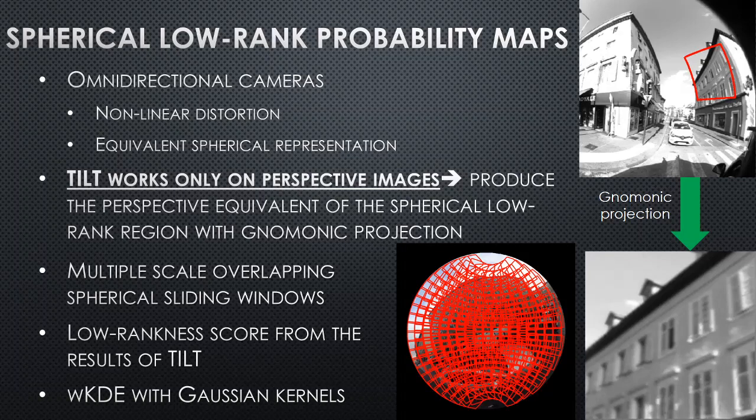The main problem is that TILT works only on perspective images, so first we need to produce the perspective equivalent of a local spherical region. To do this, we use the gnomonic projection and the fact that an omnidirectional image always has an equivalent spherical representation. To cover the whole image, we use multiple scale overlapping spherical sliding windows and run TILT in every window.